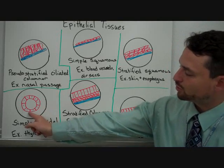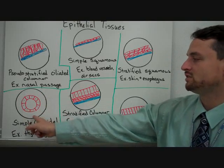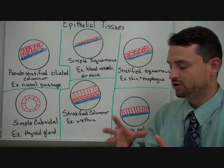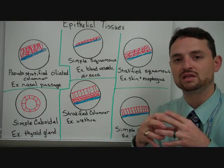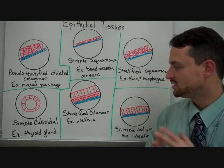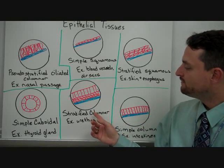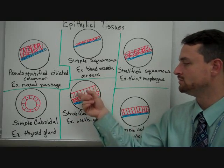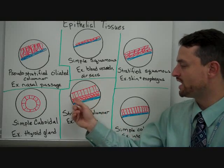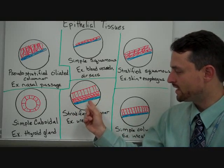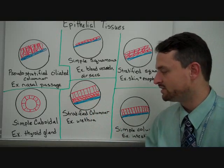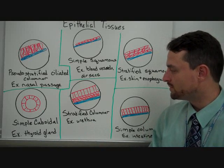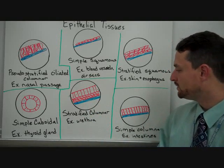Down here we have simple cuboidal. You can see it's circular, and you see this with the thyroid gland and some other glands in the body where they're secreting into a space, and what's secreted in that space will be sent to other areas in the body. Down here we have stratified columnar — column cells in layers on top of layers with the basal membrane at the bottom. This is things like the urethra, a very long trip that has to be made, well protected for the body.